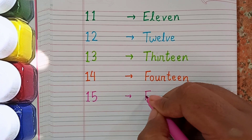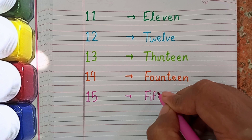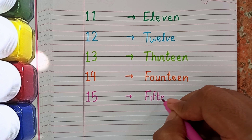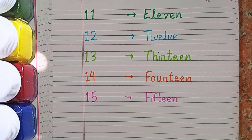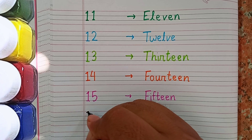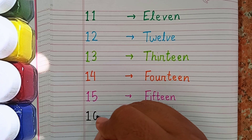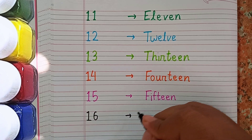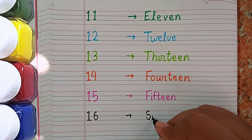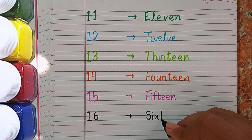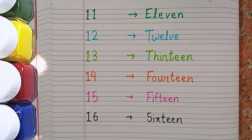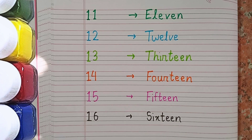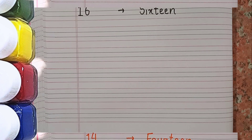The spelling of 15 is F-I-F-T-E-E-N. After 15 the next number is 16 and the spelling of 16 is S-I-X-T-E-E-N. Again, repeat the spelling with me: S-I-X-T-E-E-N.